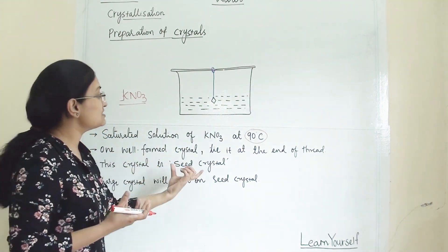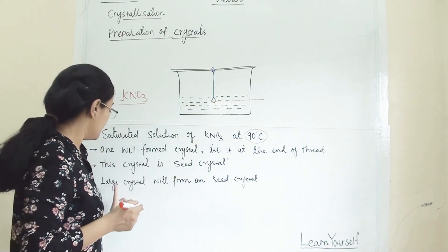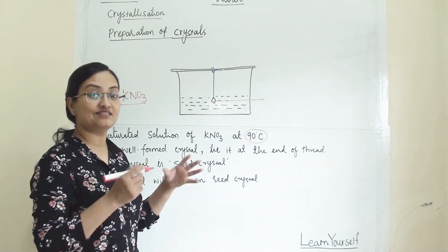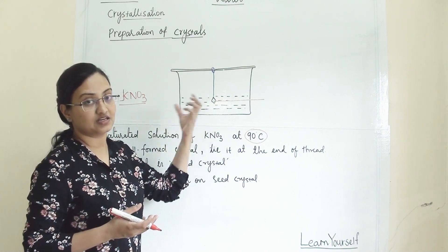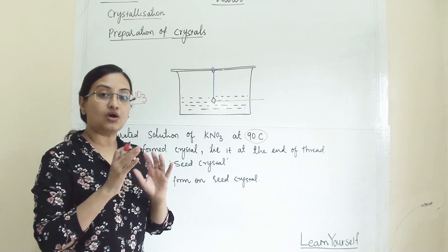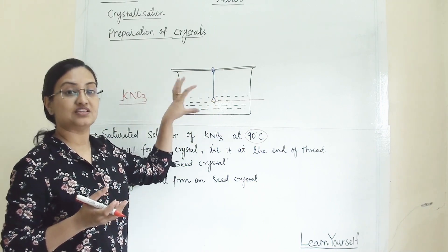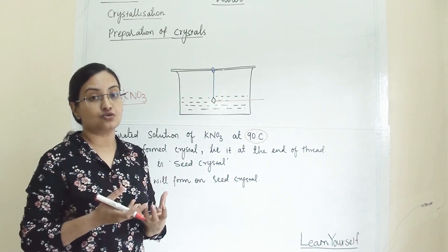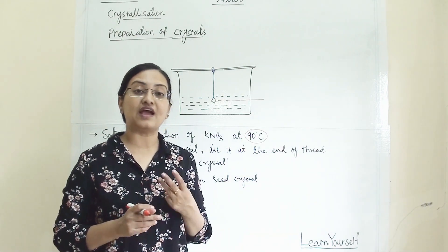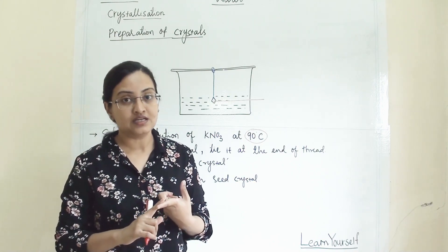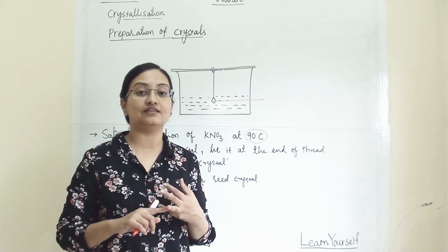This crystal is known as a seed crystal — the crystal we have hung in the middle of the solution. A large crystal will form on the seed crystal, allowing more and more deposition of solute onto it. That is why it is called a seed crystal. At the end of the procedure, once all the crystals have formed, you will see a large bunch of crystals on the seed crystal because it allows deposition of excess solute. This is how we get crystals from a hot saturated solution. We must maintain three conditions: evaporation should be at a lower rate, cooling has to be gradual, and rapid cooling must be avoided — otherwise we get amorphous solids instead of crystals.